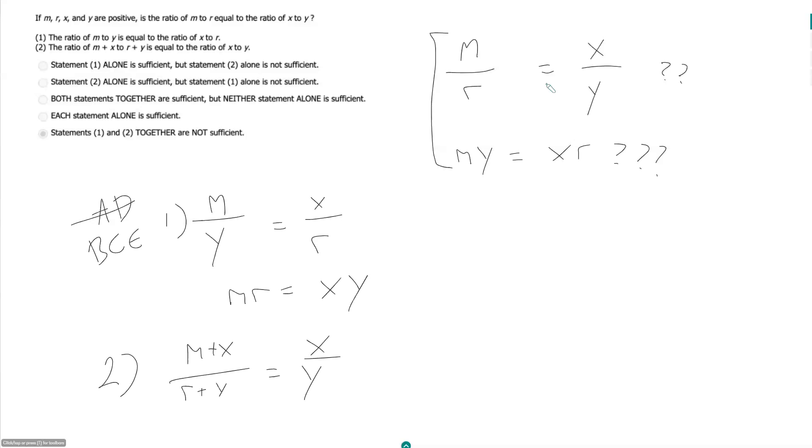That is telling me m plus x times y is equal to r plus y times x. If I want to fully simplify this, I should distribute these out. So this is telling me my plus xy is equal to rx plus xy.